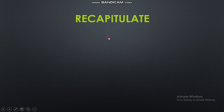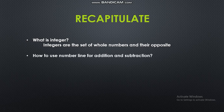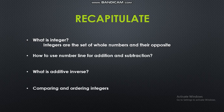Let us recapitulate what we studied. Integers are a set of whole numbers and their opposites — that is, a set of all positive and negative numbers. We studied how to use a number line for addition and subtraction. We studied what additive inverse is — remember, additive inverse is the opposite of the given number. And we studied how to compare and order integers. Thank you for watching.